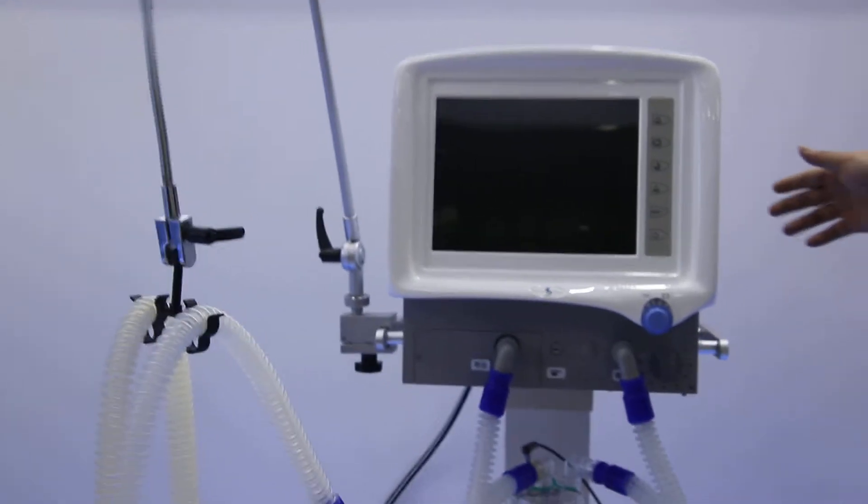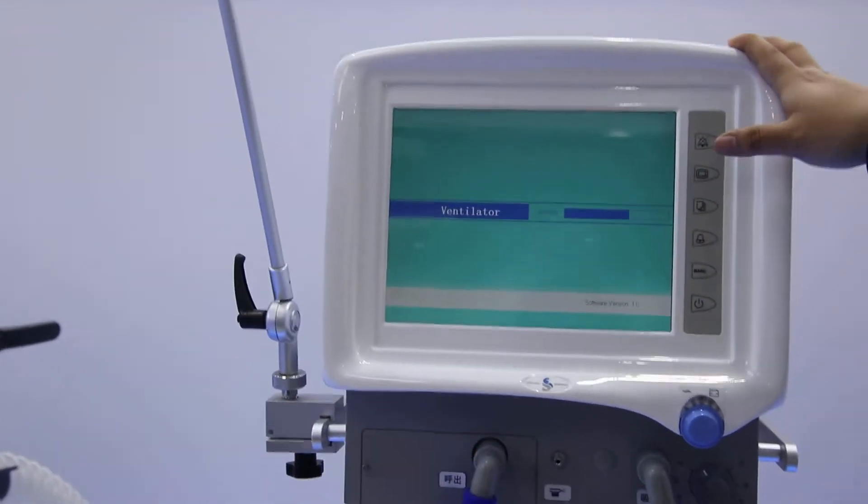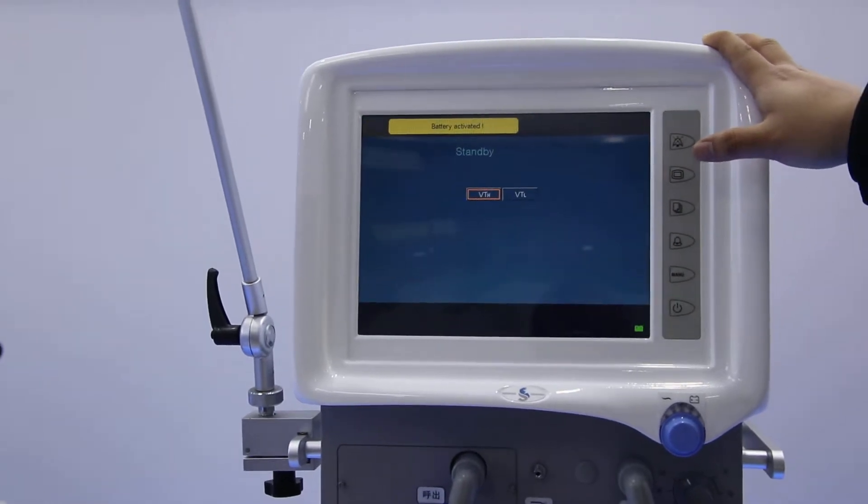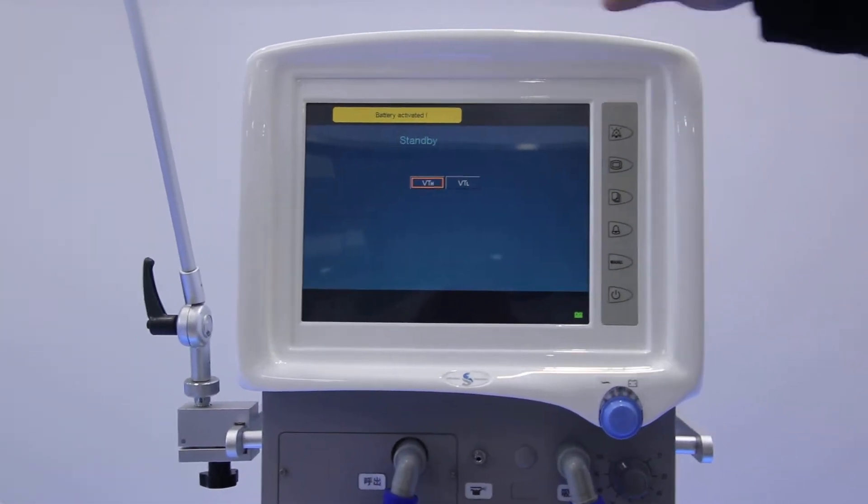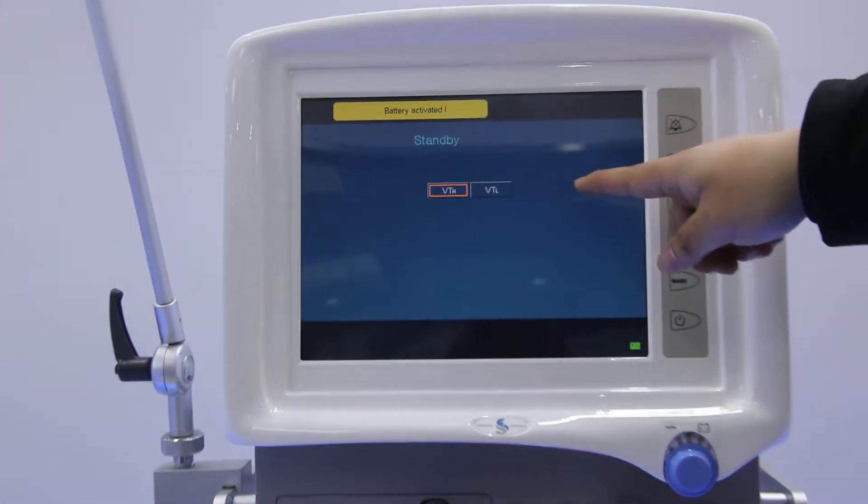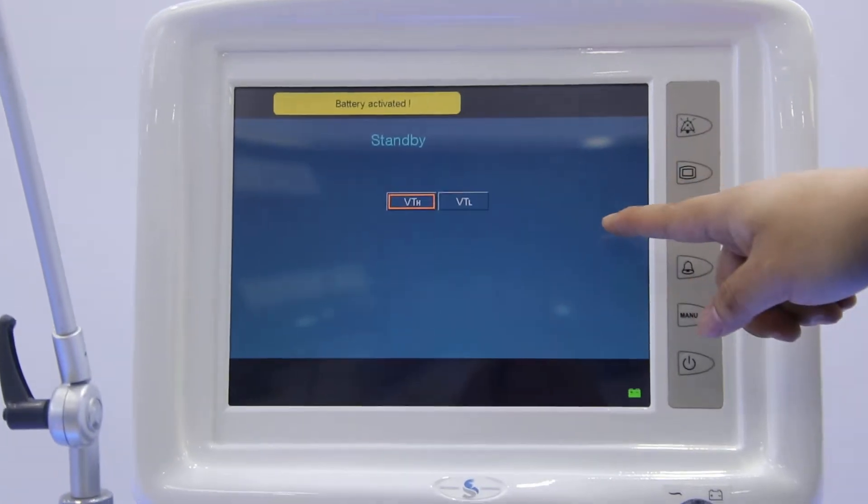First, we turn on the power on the back side of the machine. You will see the machine first goes into self-testing to protect the machine and prevent damage to the patient. In the standby interface, we can see there are two choices. First one is for adult and second one is for children and neonatal.